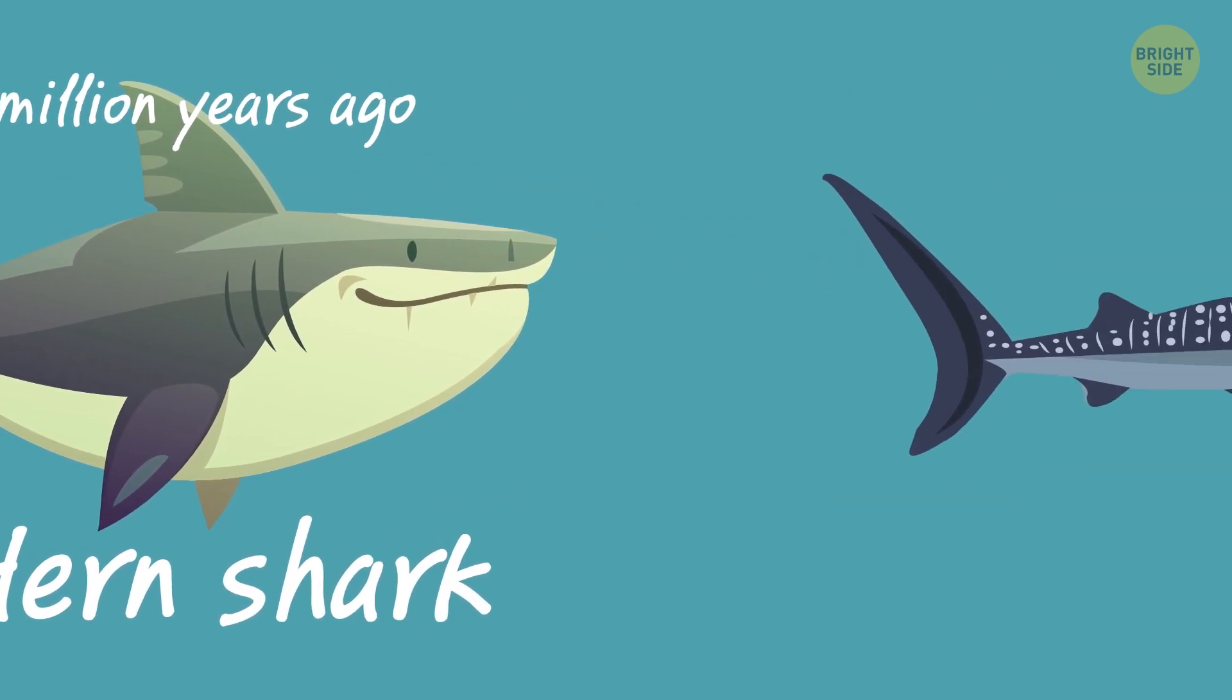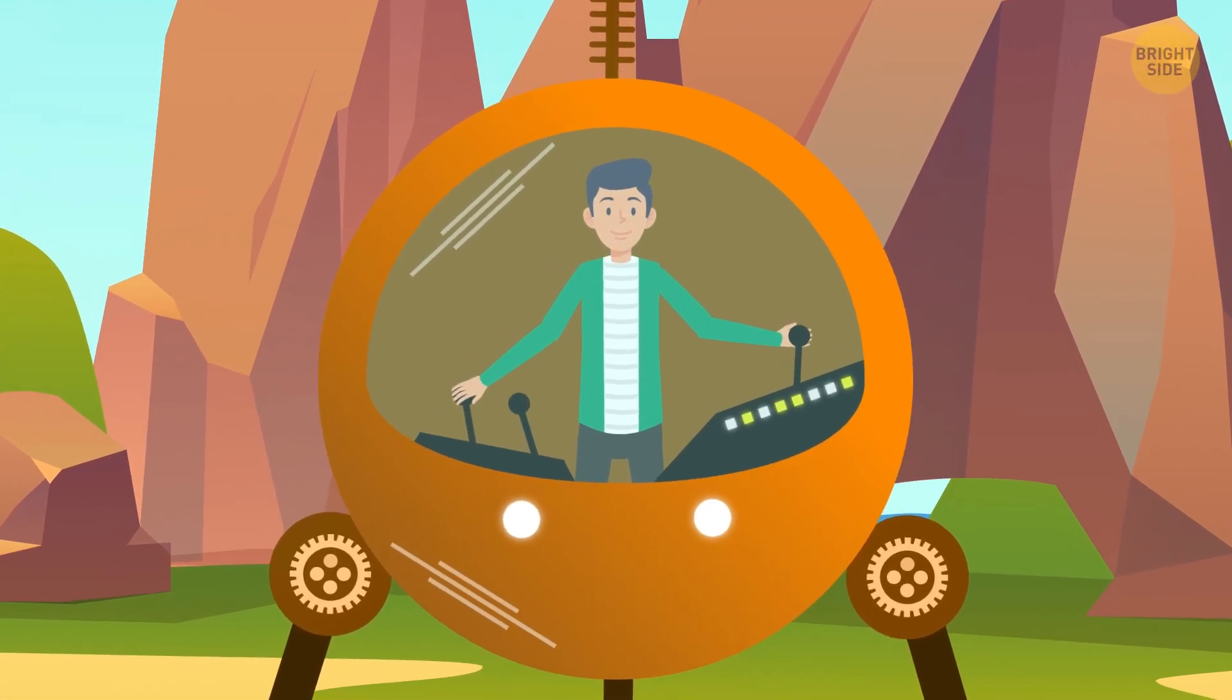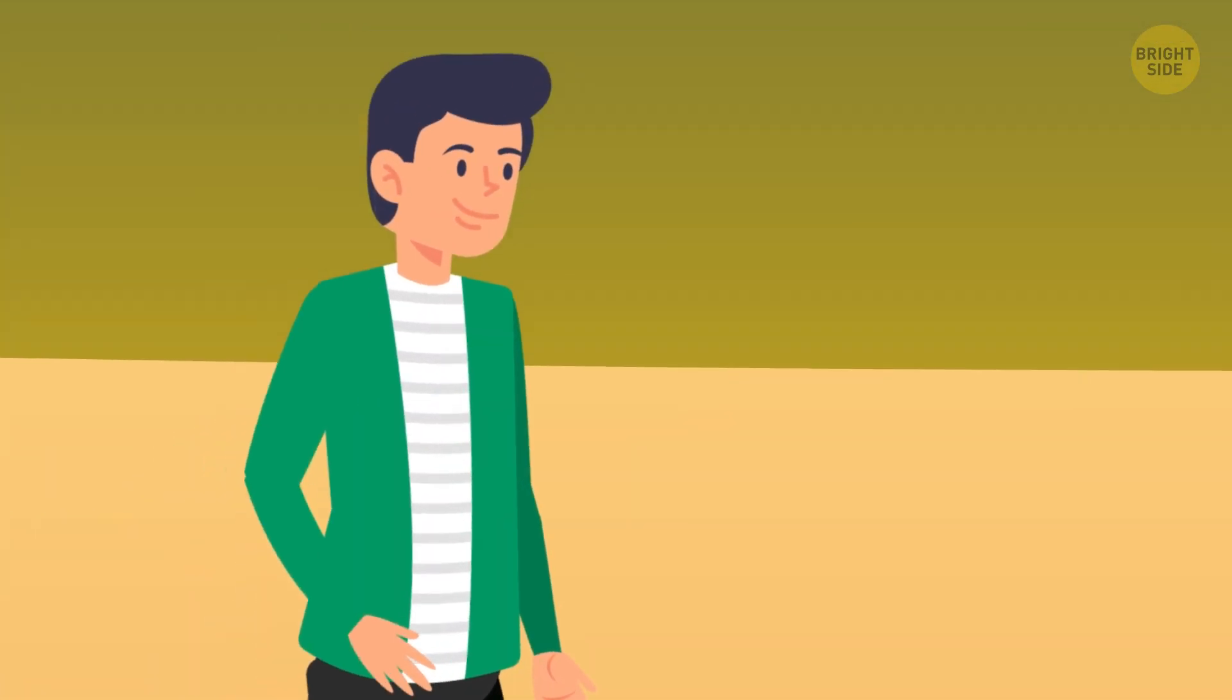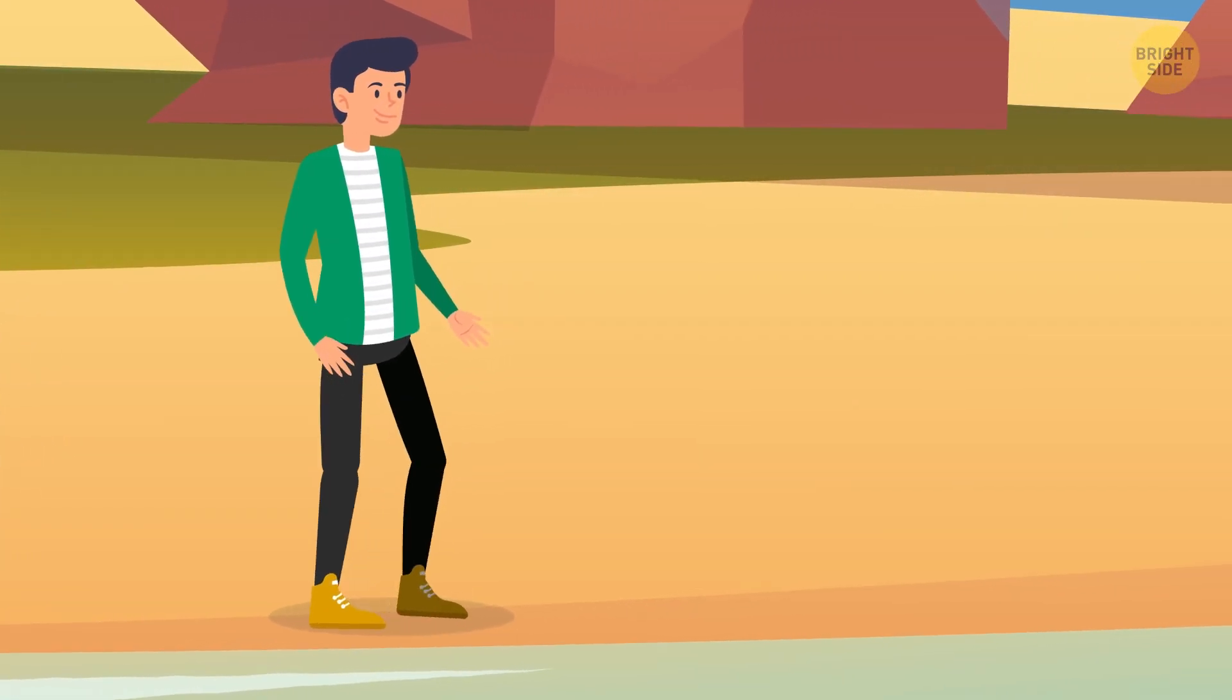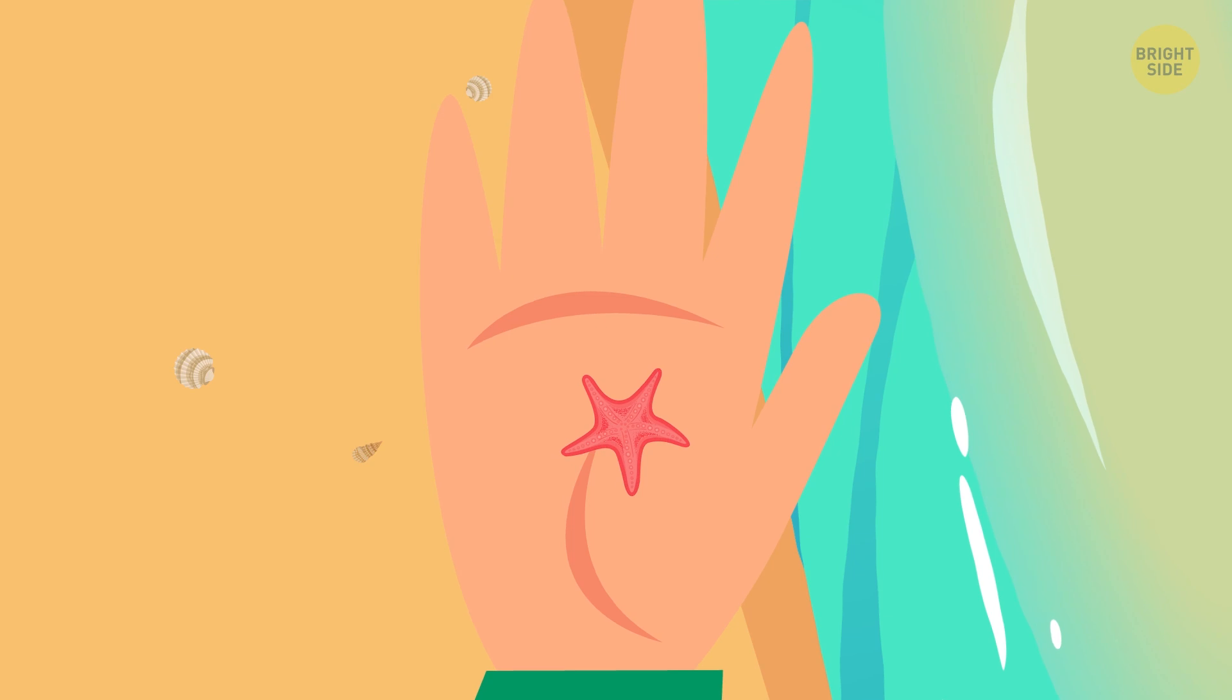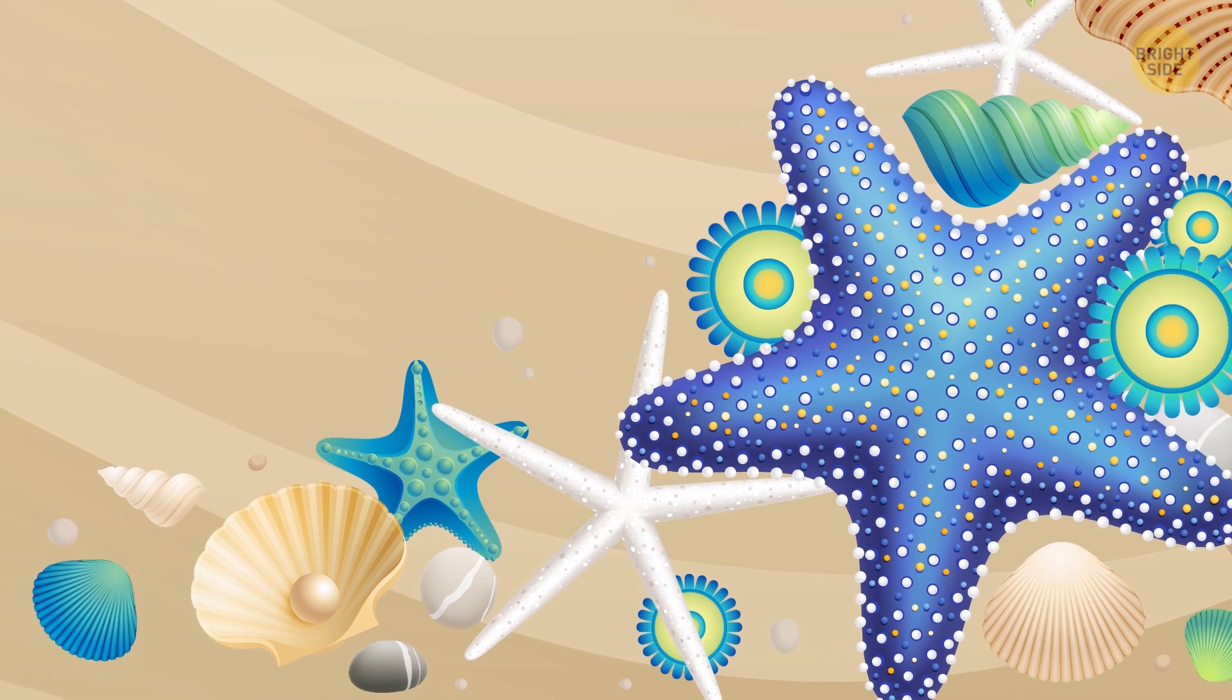Sam decides not to change the location, just the time. That's why he finds himself at the same place only 35 million years earlier. He's walking along the shore when he spots something tiny. On closer inspection, he realizes it's a minuscule starfish that's smaller than his thumbnail. This species doesn't exist nowadays. Bigger and stronger starfish have replaced the teeny ones.